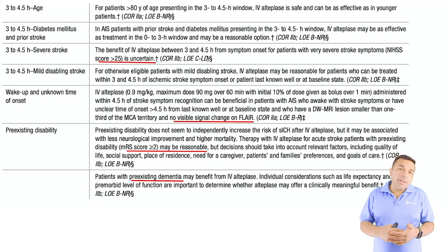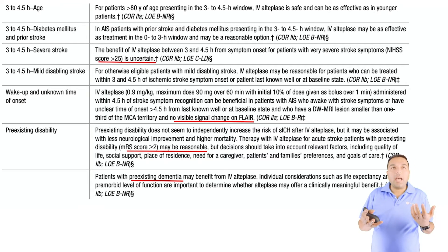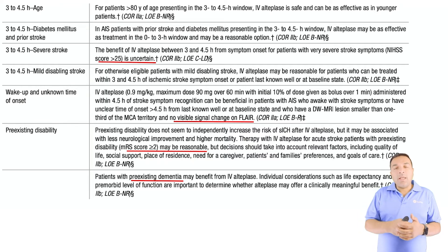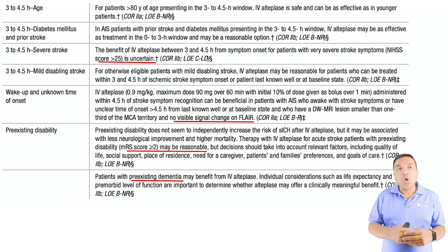In patients presenting with mild disabling stroke in the three-to-four-and-a-half hour window, you should also consider giving TPA. The class of recommendation in those cases is 2b.